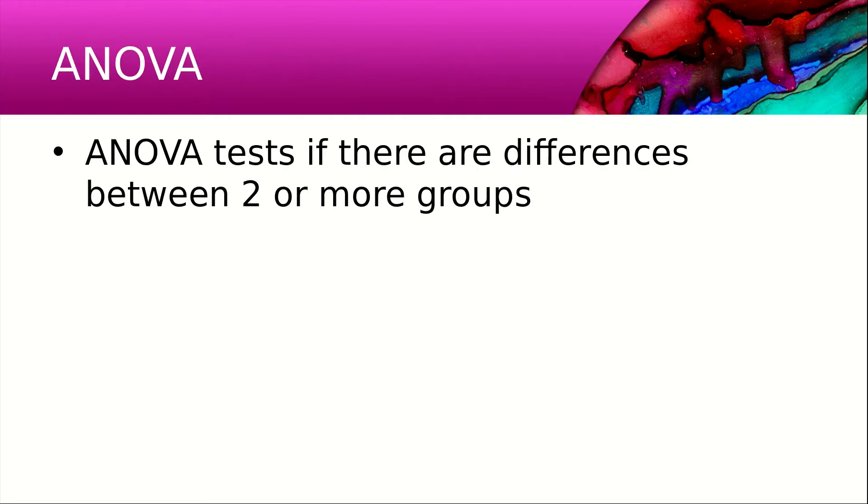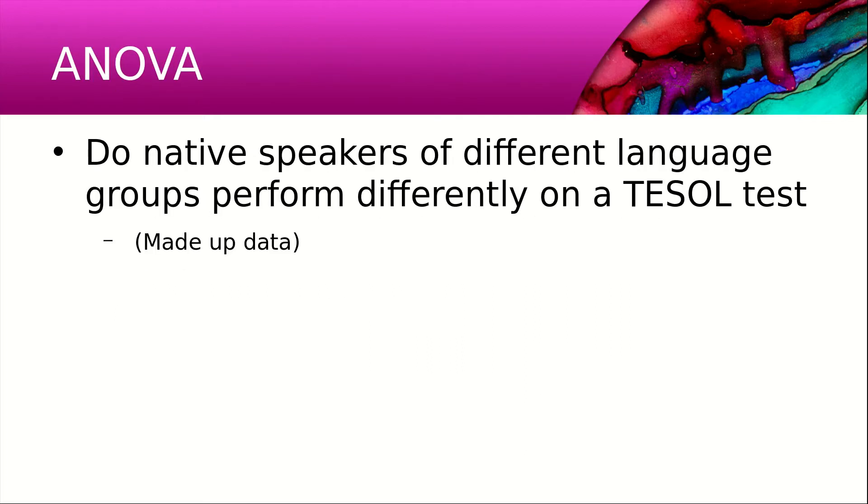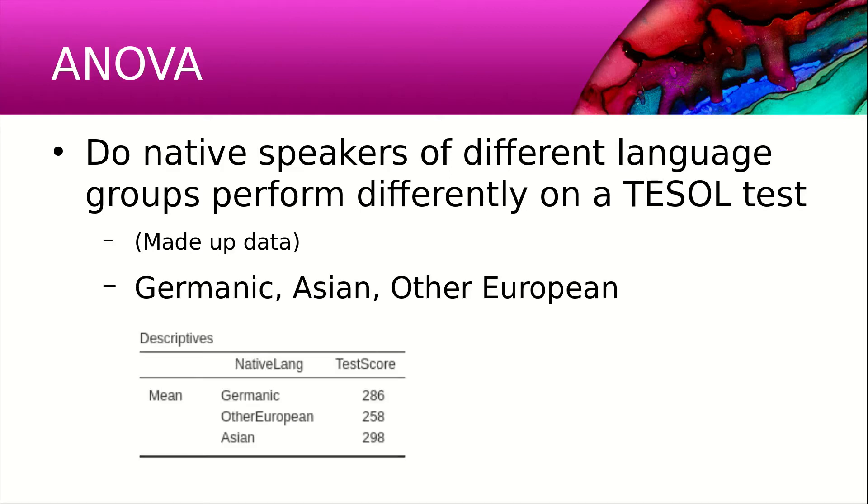ANOVA tests if there are differences between two or more groups. And once again, I'll use made-up data. The question is, do native speakers of different language groups perform differently on a TESOL test? So we have Germanic, Asian, and other European groups.